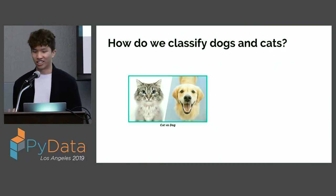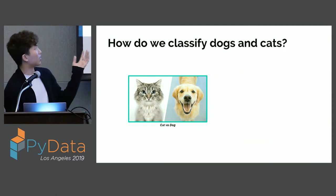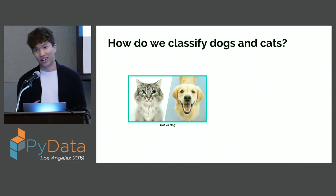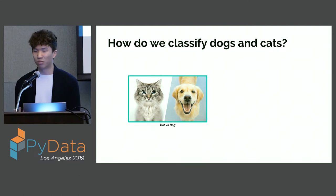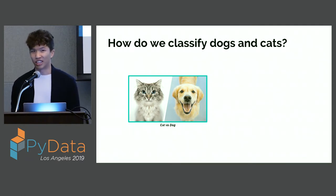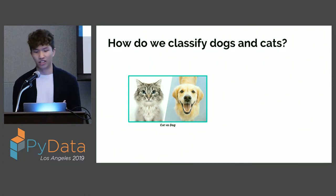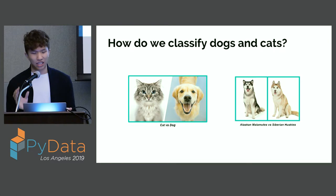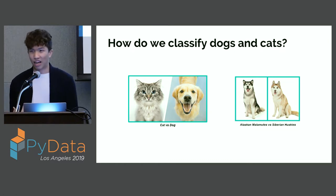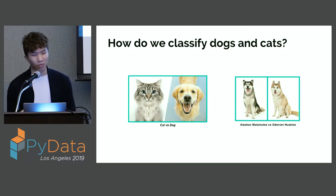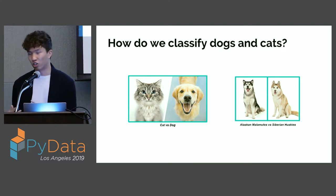We're going to talk about how do we actually classify dogs and cats. It's really easy for us as humans — we can easily tell a cat from a dog. But we know this because at some point, our teachers or parents told us, and throughout our lives we've been trained to recognize them. Similarly, you might not know that an Alaskan Malamute and a Siberian Husky look similar, but a Malamute has darker fur while a Husky has lighter fur. Once told, you can be trained to tell the differences.